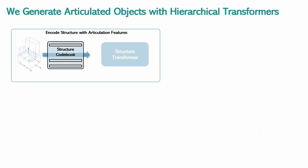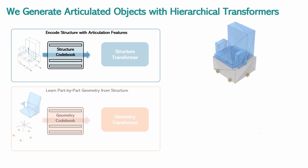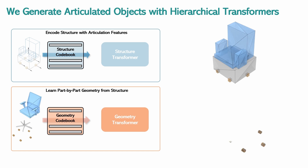MeshArt is a hierarchical transformer-based approach for generating articulated objects. We decompose the generation process into high-level structure generation and low-level geometric synthesis. The structure is represented by part-bounding boxes with their articulation properties, encoded into a structure codebook and modeled with a decoder-only transformer. Part geometry is encoded into another codebook, with a geometry transformer guided by structural information to ensure coherence.